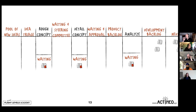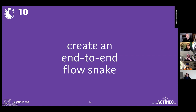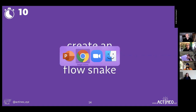A lot of them are waiting for this, waiting for that, waiting for something else. So what we're going to try to do is have a way of visualizing how this end-to-end process works. We're going to do an exercise — we're going to call this the flow snake.